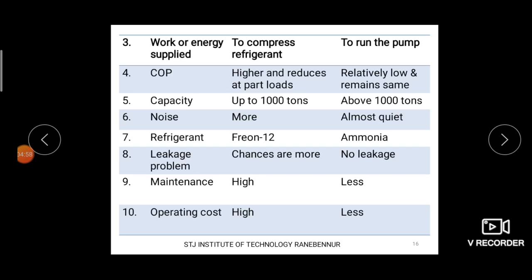The next difference is the refrigerant used. The commonly used refrigerant in vapor compression refrigerating system is Freon-12, and in vapor absorption refrigerating system it is ammonia. Regarding leakage: the chances of leakage are more in VCR because the pressure and temperature achieved are very high. Leakage is less in the VAR system due to the absence of a compressor.